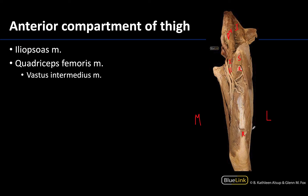You can still see the vastus lateralis and the vastus medialis, but you can also now see the vastus intermedius because the rectus femoris has been removed. You would have to reflect or remove the rectus femoris in order to have a nice view of the vastus intermedius.